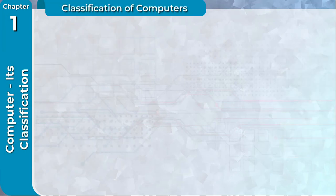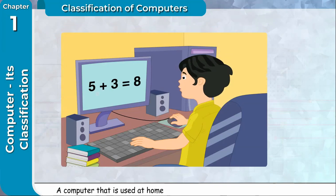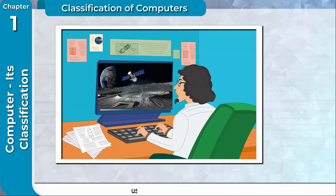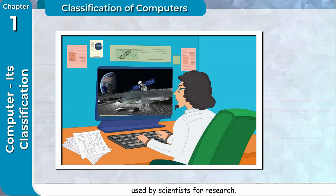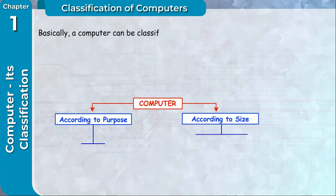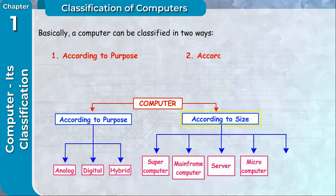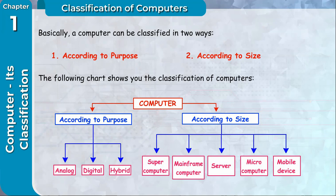Classification of Computers: A computer that is used at home differs in size and shape from the computer used by scientists for research. Basically, a computer can be classified in two ways: according to purpose and according to size. The following chart shows you the classification of computers.